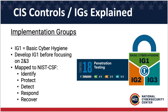Those safeguards are broken up into your basic level 1, then level 2, and level 3 — or group 1, 2, and 3 implementation groups. Always go after IG1 first, knock out your basics, your fundamentals, and then move on to 2 and 3.